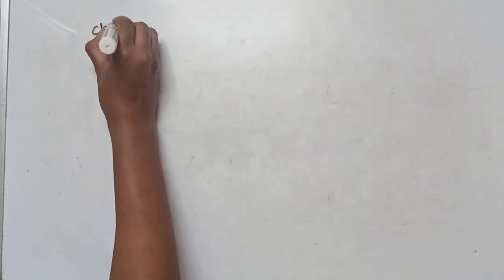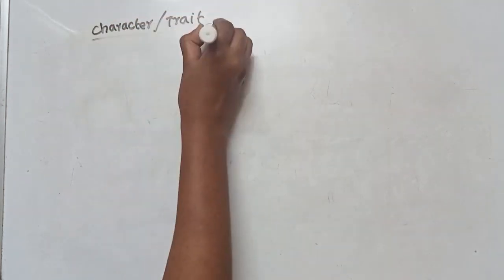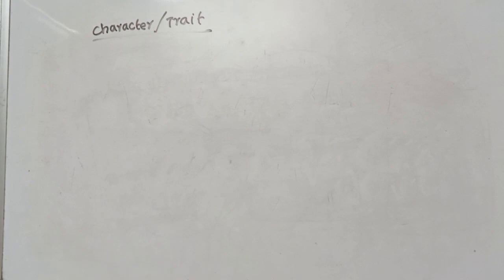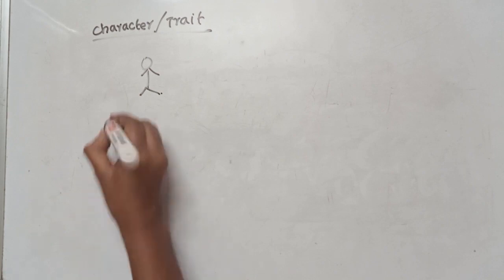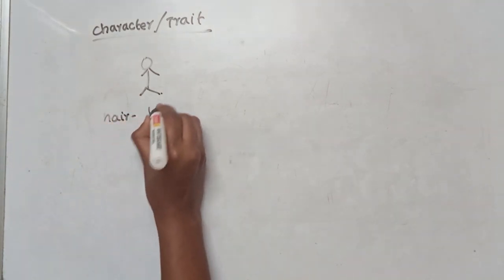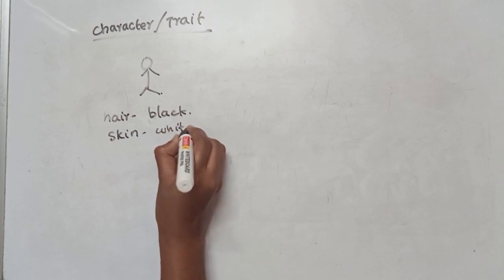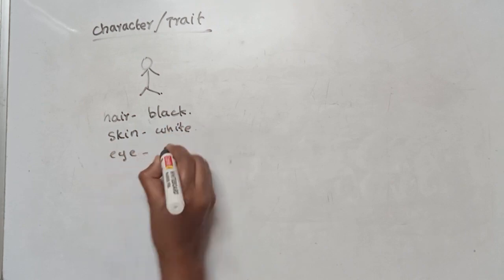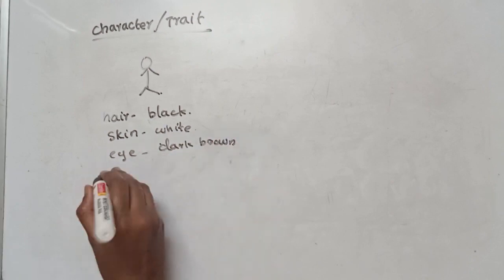Now, about characters — we also call characters 'traits.' Traits are things like eye color and hair type. For example, I am going to describe a person. Looking at the hair — black color. Looking at the eyes — dark brown color.